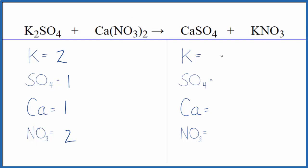Product side, one potassium, one sulfate, one calcium, and one nitrate. So it makes it a lot easier, a lot quicker to figure out how to balance the equation. We'll get the same answer in the end. This is just faster.